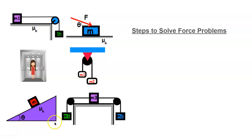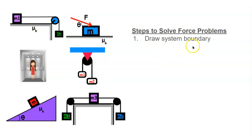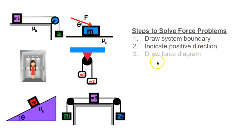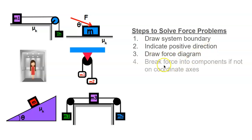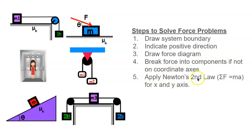In this video, we're going to learn how to solve six dynamics problems. To solve these problems, I'll go through a set of steps. The first step is to draw a system boundary. The second step is to indicate positive direction. The third step is to draw the force diagram. The fourth step is to break forces into components if they're not on the coordinate axes. The fifth step is to apply Newton's second law — net force equals ma — for the x and y axes. The sixth step is to solve for the unknown variable.